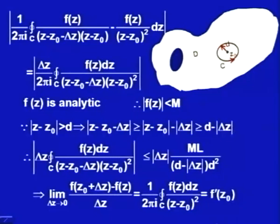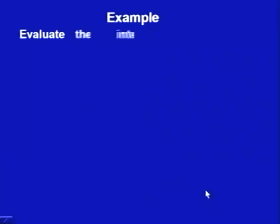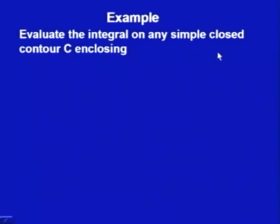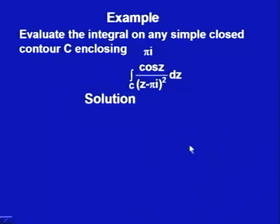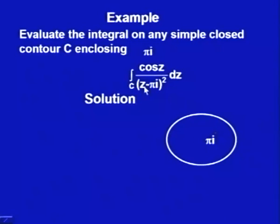Now let us see how this theorem helps in evaluating integrals. Evaluate the integral along any simple closed contour C enclosing πi of cos(z)/(z − πi)² dz. Cos(z) is an entire function, so as long as the contour encloses πi, the result holds. Using f'(z₀) = (1/2πi) ∫_C f(z)/(z − z₀)² dz with f(z) = cos(z) and z₀ = πi.